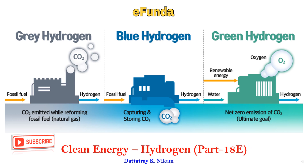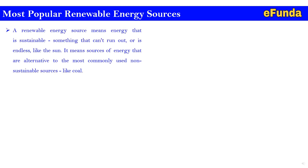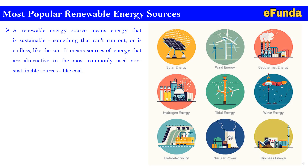Most popular renewable energy sources: a renewable energy source means energy that is sustainable — something that can't run out or is endless, like the sun. When you hear the term 'alternative energy,' it usually refers to renewable energy sources too — sources of energy that are alternative to the most commonly used non-sustainable sources like coal. Various types of renewable energy sources include solar energy, wind energy, geothermal energy, hydrogen energy, tidal energy, wave energy, hydroelectricity, nuclear power, biomass energy, etc. What is zero carbon or low carbon energy?